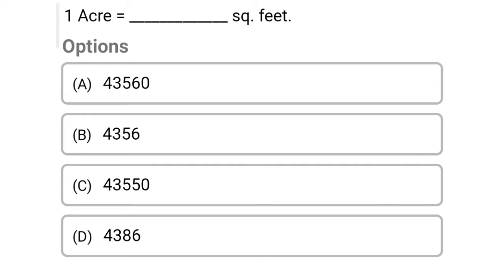Next question: one acre is equal to how many square feet? Option A: 43560, Option B: 4356, Option C: 43550, Option D: 4386. The correct answer is Option A, 43560. So one acre is equal to 43560 square feet.